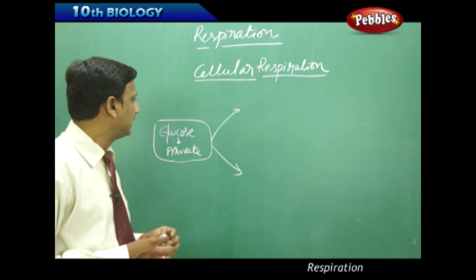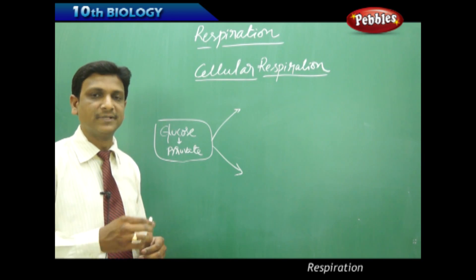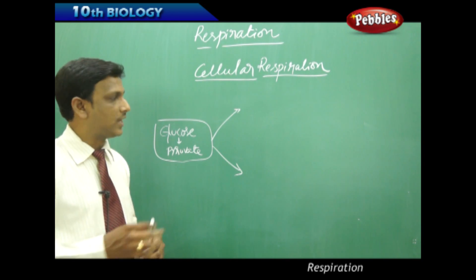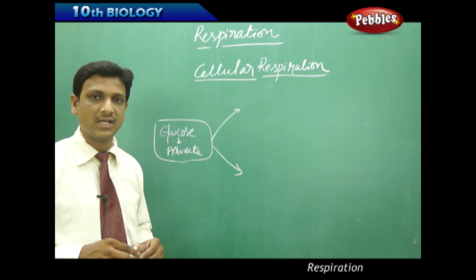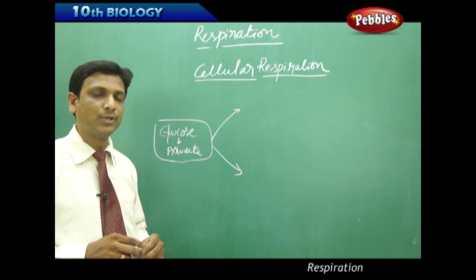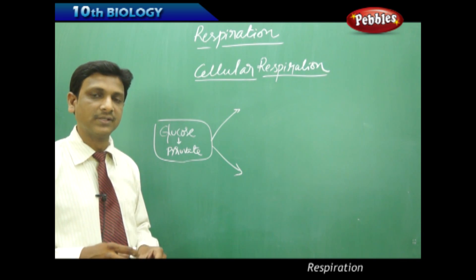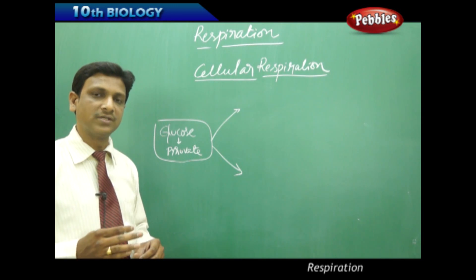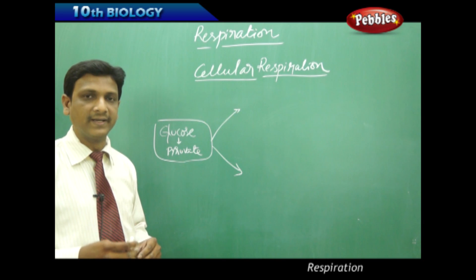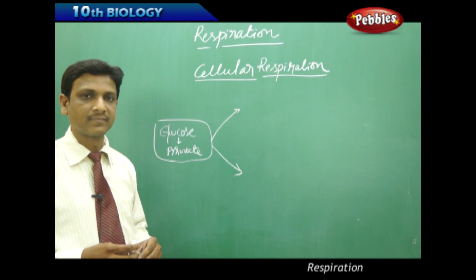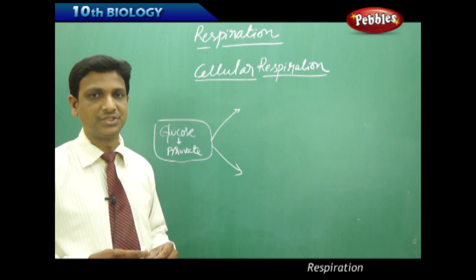Now let us look at the differences between the two different types of respiration. In cellular respiration, there are two different types: one is aerobic respiration and the other is anaerobic respiration. Aerobic respiration takes place in the presence of oxygen, while anaerobic respiration takes place in its absence.